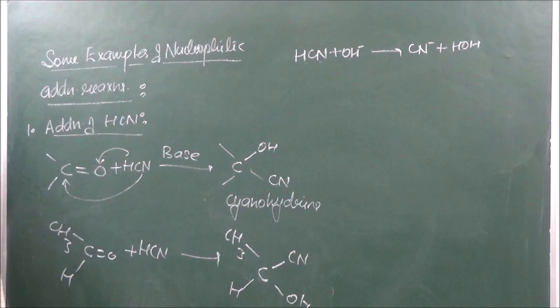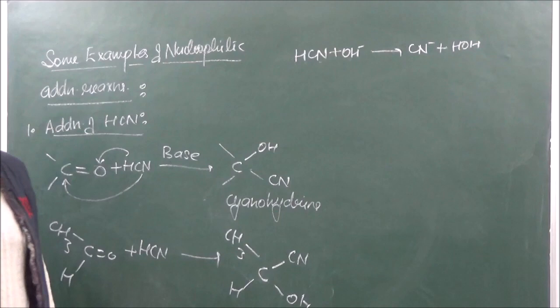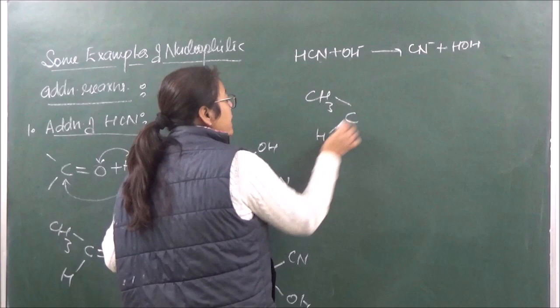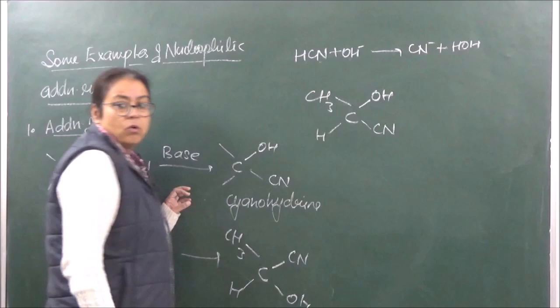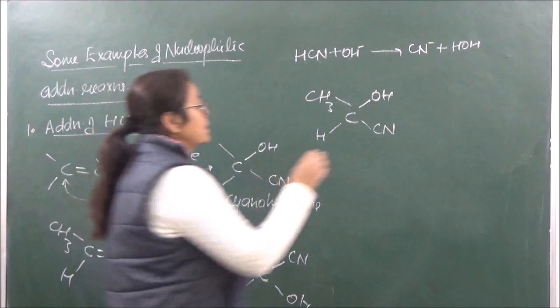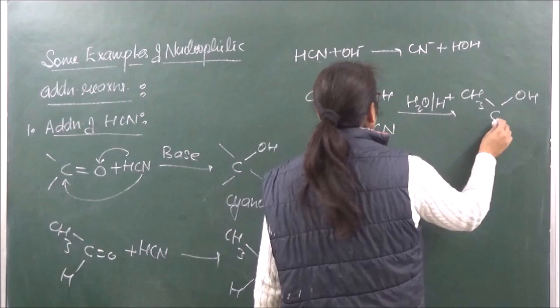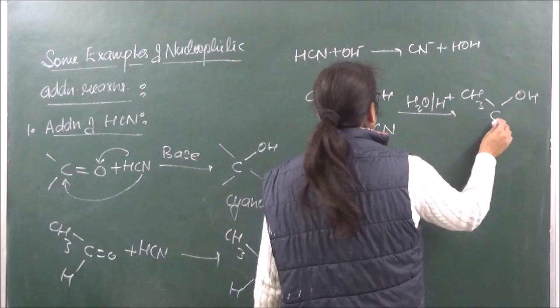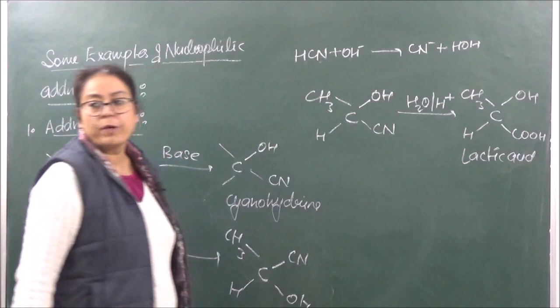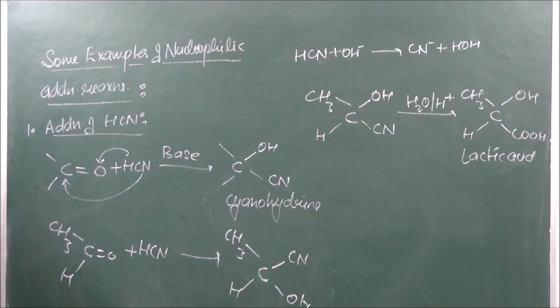The cyanohydrin formed is a very important product. It further helps to give important products - for example, hydrolysis of acetaldehyde cyanohydrin (CH₃CH(OH)CN) in presence of acid gives CH₃CH(OH)COOH, which is 2-hydroxypropanoic acid (lactic acid).